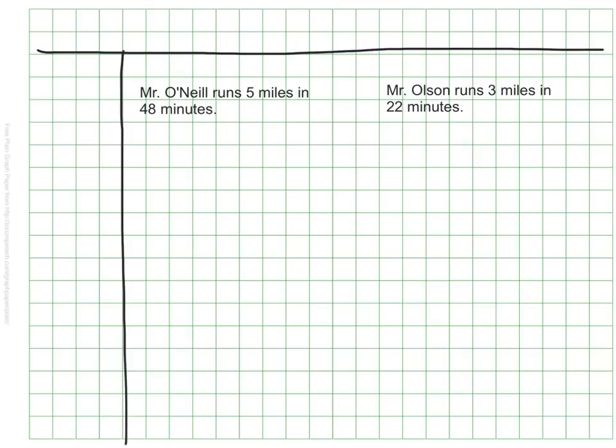Let's start by finding the unit rate for Mr. O'Neill. I'm going to use equivalent ratios that are set up as fractions to do that. It takes Mr. O'Neill 48 minutes to run 5 miles, so I've made that into a part-to-part ratio. I want to know how long it takes him to run one mile, so I'm going to record that as the denominator in my equivalent ratio that I've set up here. I can see right away that I am scaling down.